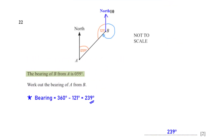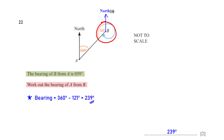The bearing of B from A is 59 degrees. Work out the bearing of A from B. The bearing of B from A is 59°. These two angles are interior angles which add up to 180°, so the supplementary angle is 180° − 59° = 121°. Since angles at a point add up to 360°, the bearing of A from B is 360° − 121° = 239°.